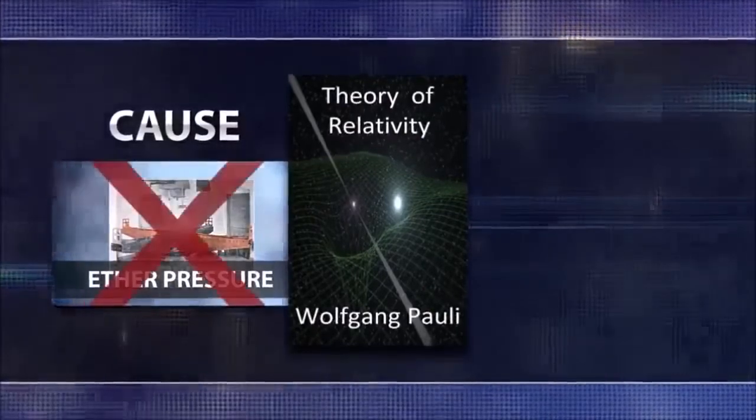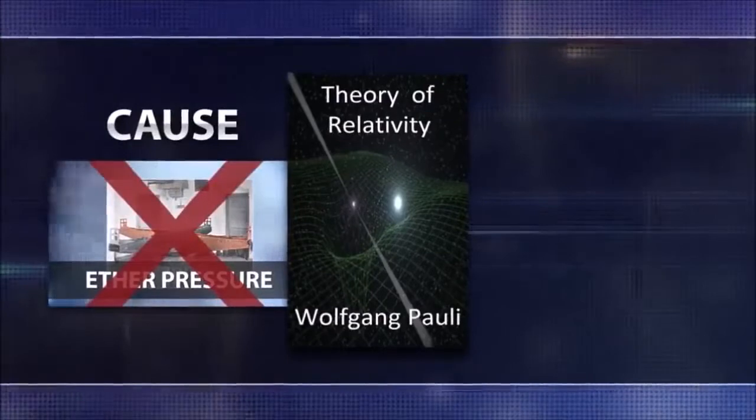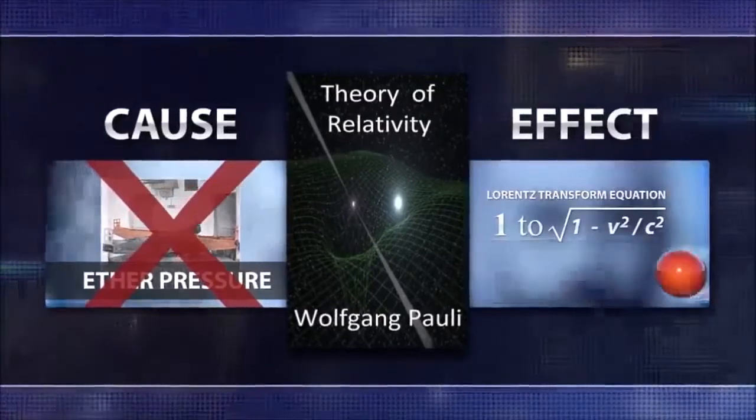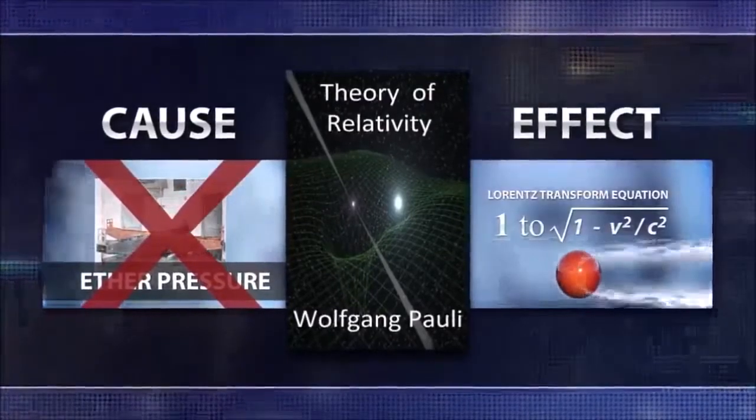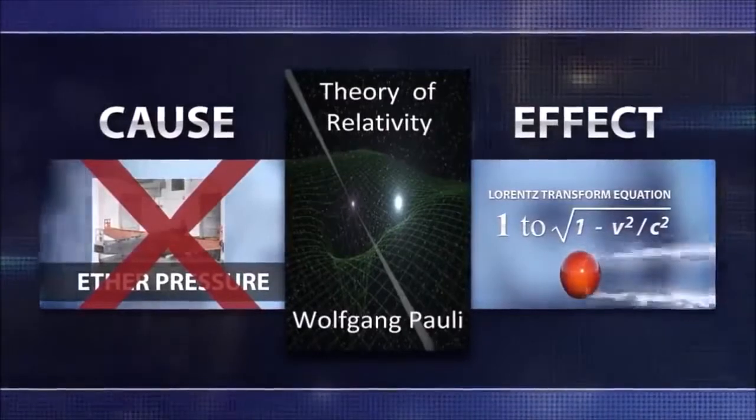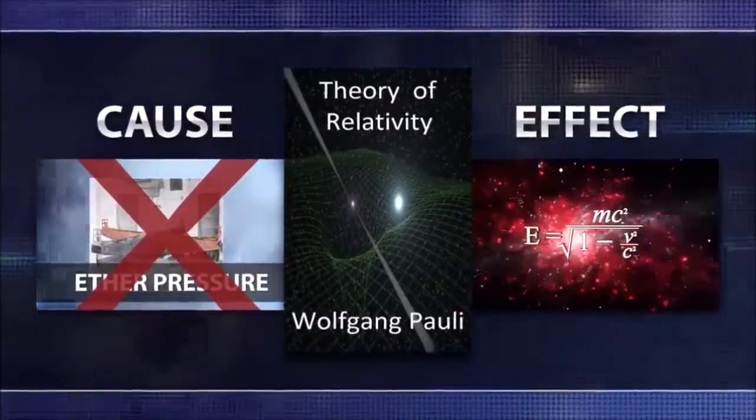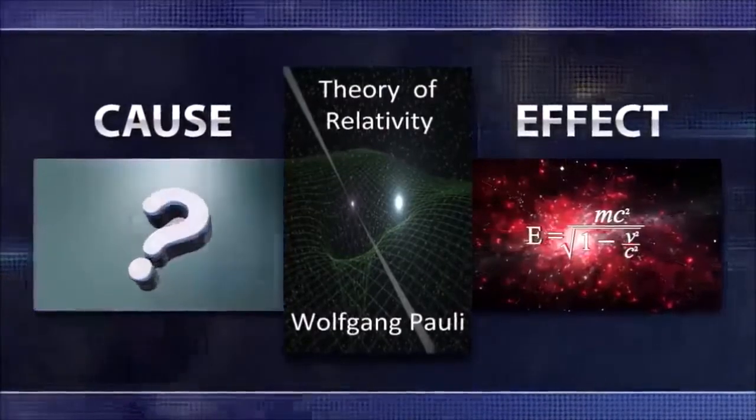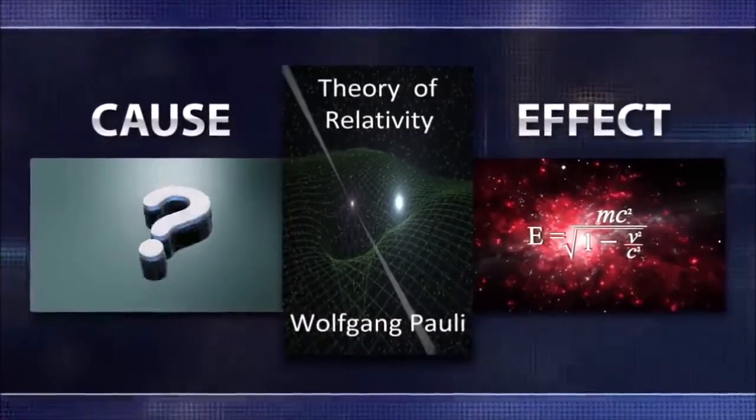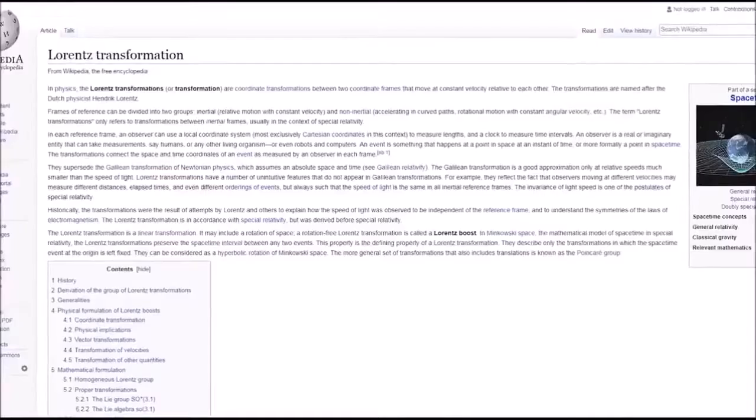So whatever the cause of the contraction, in order to give the ad hoc theory some semblance of credibility, the required amount for the metal enclosure to contract was put into a mathematical equation called the Lorenz transform.